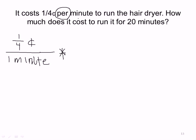Now we're going to multiply it. What are we multiplying? 1 quarter cent per minute times 20 minutes. Well, 20 minutes is just 20 minutes, right? But I'm going to choose to write my minutes this way.